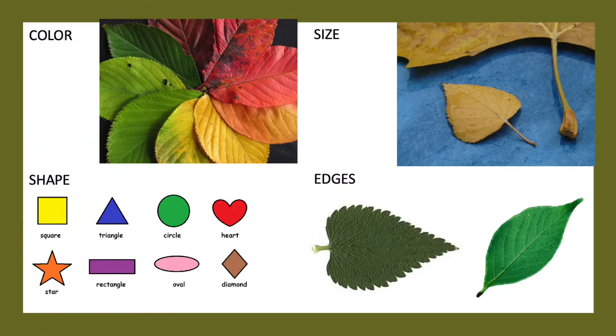You can keep going and come up with your own categories. But let's go back over: I sorted by color, then by big, medium, or small, then by the shape of the leaf, and finally by whether the outer edge was jagged or smooth. Those were my four categories. What can you come up with to sort your leaves by?